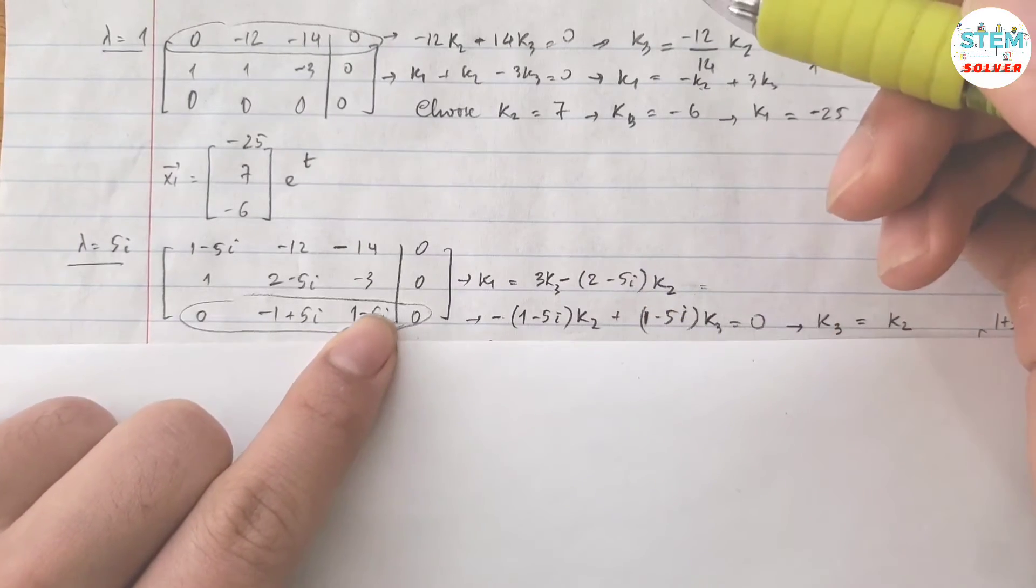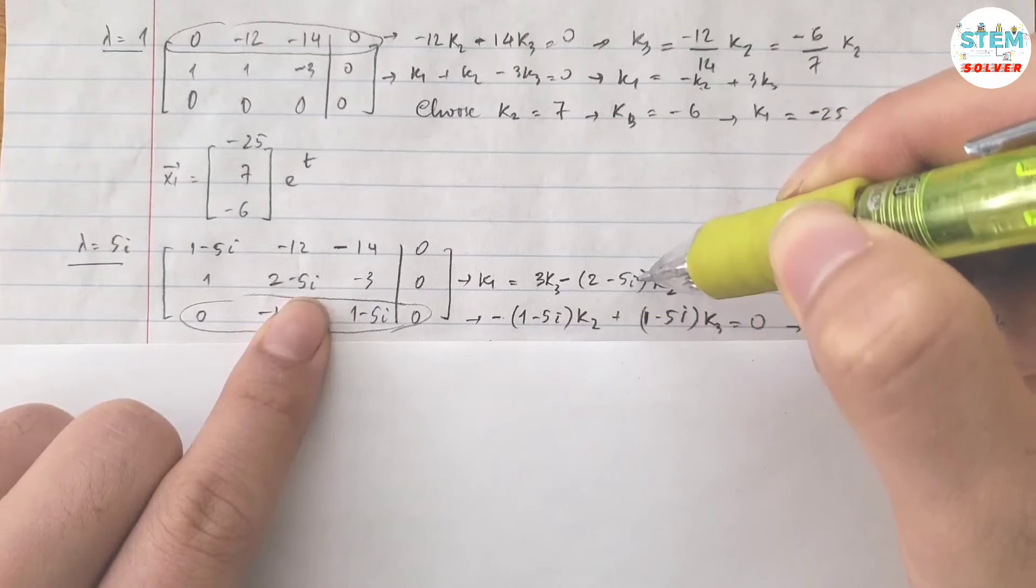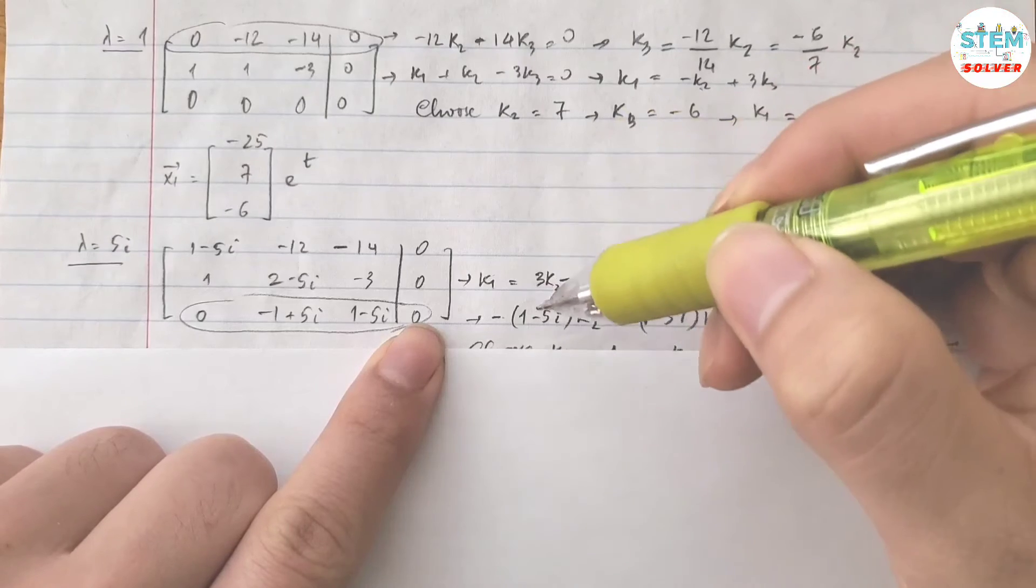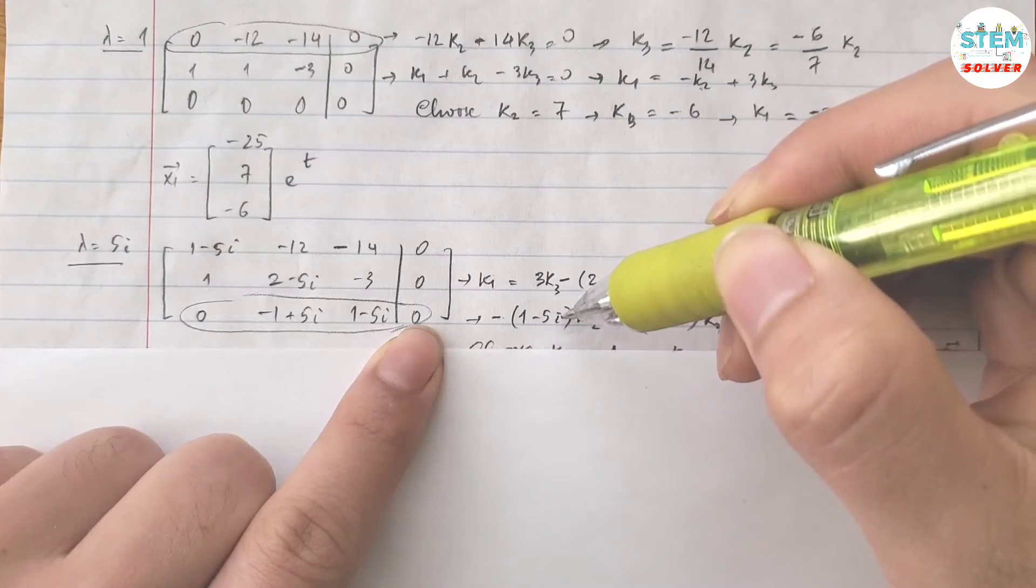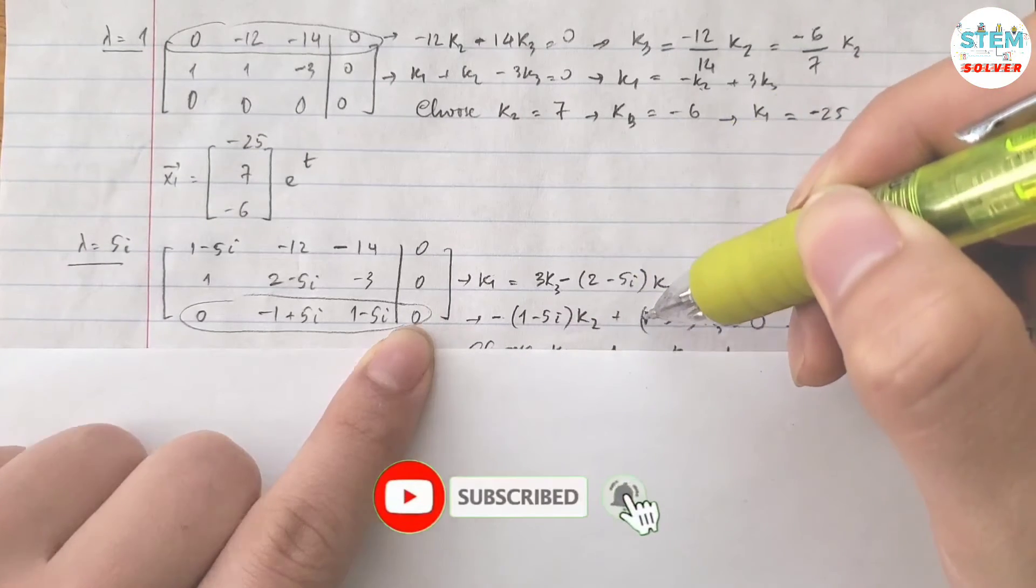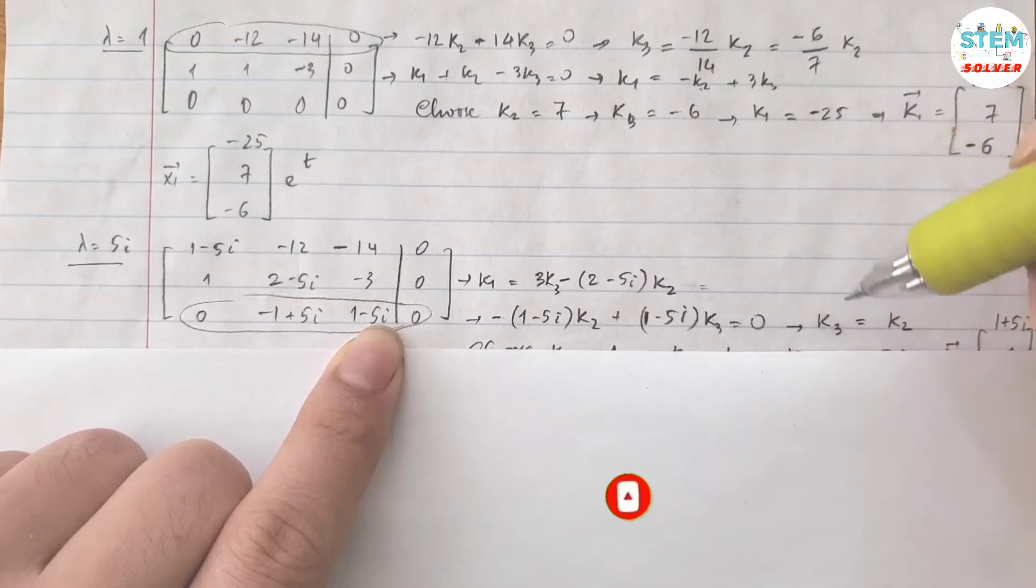From the second equation, I have k1 equals three k3 minus two minus five i times k2. From the third equation, I have negative one minus five i times k2, factor out negative one plus one minus five i times k3 equals zero. So for k3,